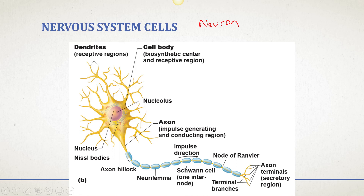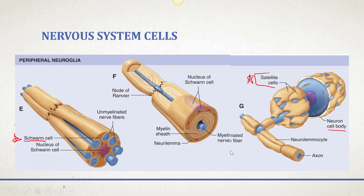Then we have the axon, which is the region that conducts the nerve impulse. Surrounding the axon, we have Schwann cells. The neurolemma is a bulge of cytoplasm and organelles of a Schwann cell. The Schwann cell literally wraps itself around the axon of a neuron — it's tightly coiled, but at the end, all of that bulging cytoplasm is called the neurolemma of that Schwann cell.